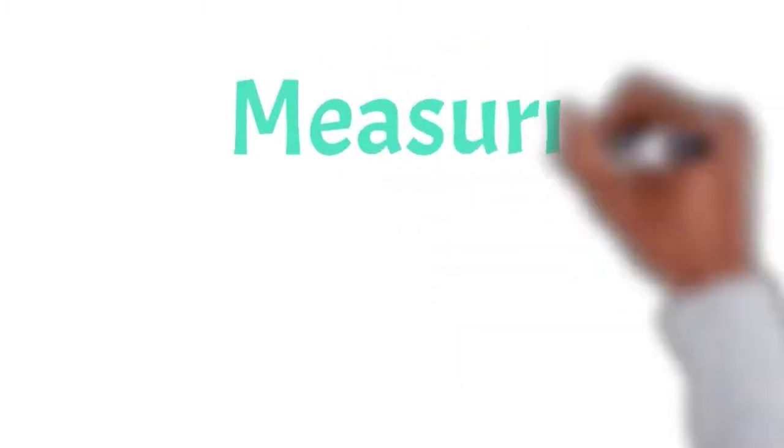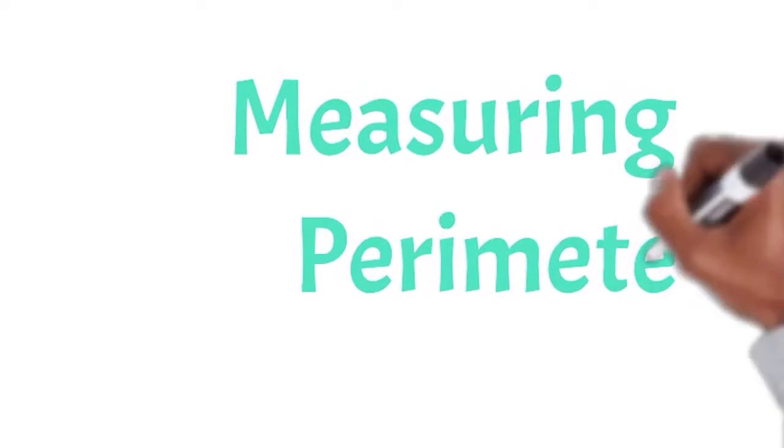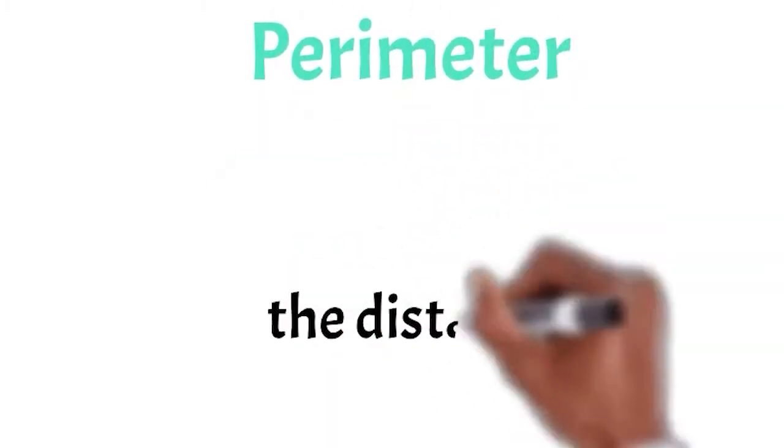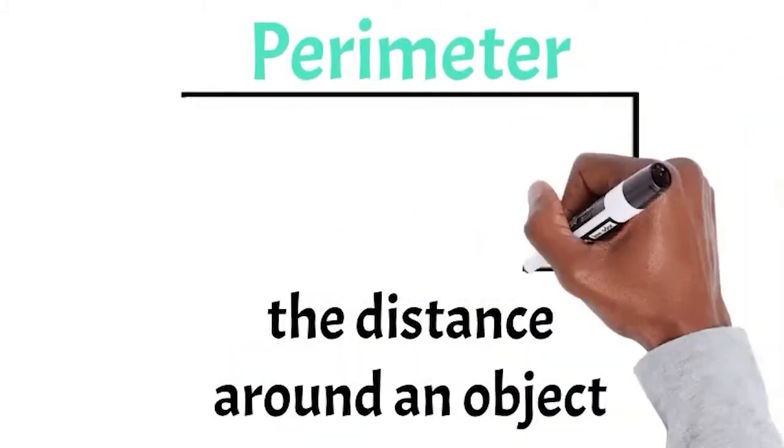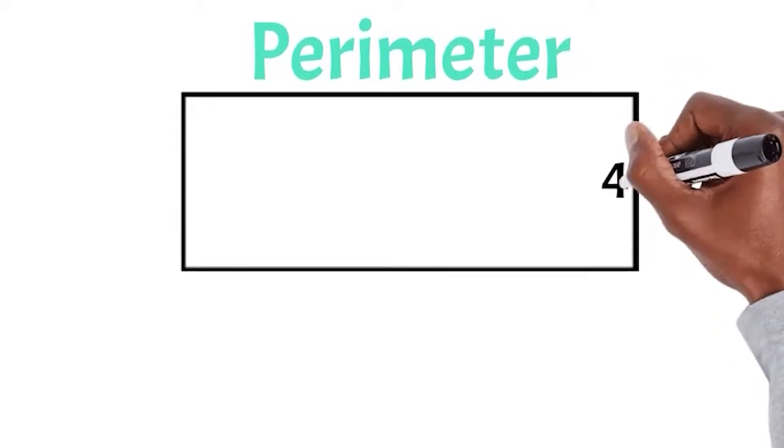Welcome back to underwater math. Let's review measuring the perimeter. Remember that the perimeter is the distance around an object. We find that distance by adding up the length of all the sides.